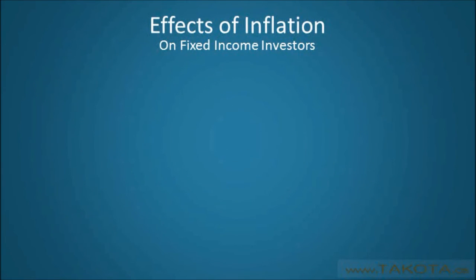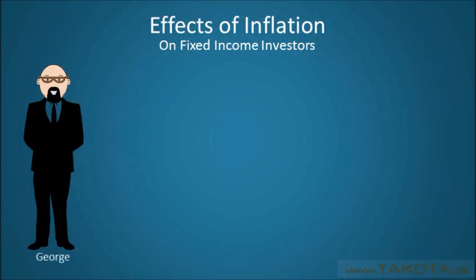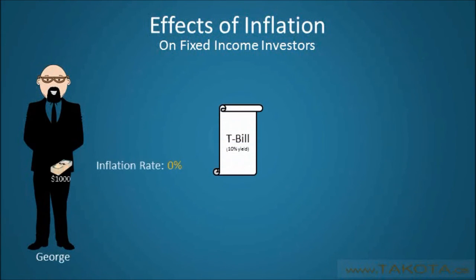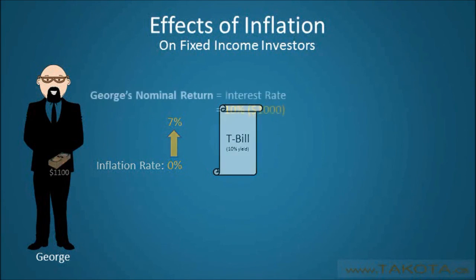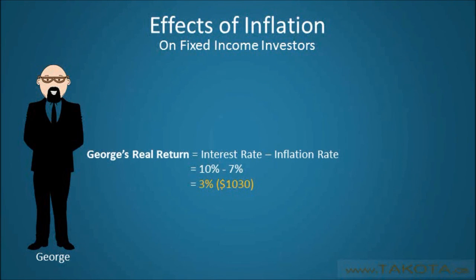But fixed-income investors are undoubtedly the group most affected by inflation. In order to illustrate this, consider the example of George. George has invested $1,000 in a one-year U.S. Treasury bill with a 10% yield. Once the bill has reached maturity, George collects his $1,100. However, in the time since he bought the T-bill, the inflation rate has climbed from 0% to 7%. So George's 10% nominal return effectively amounts to a real return of only 3%.